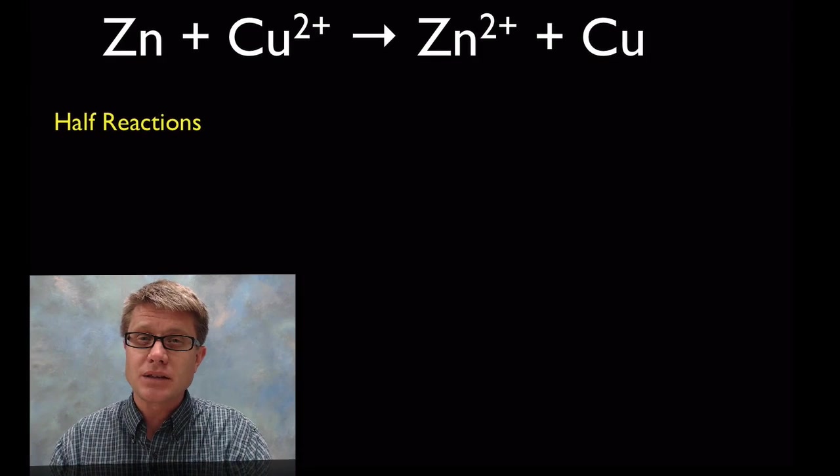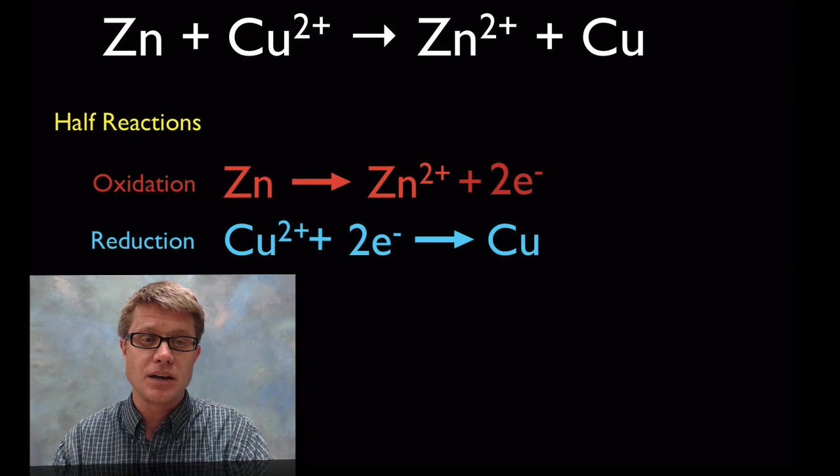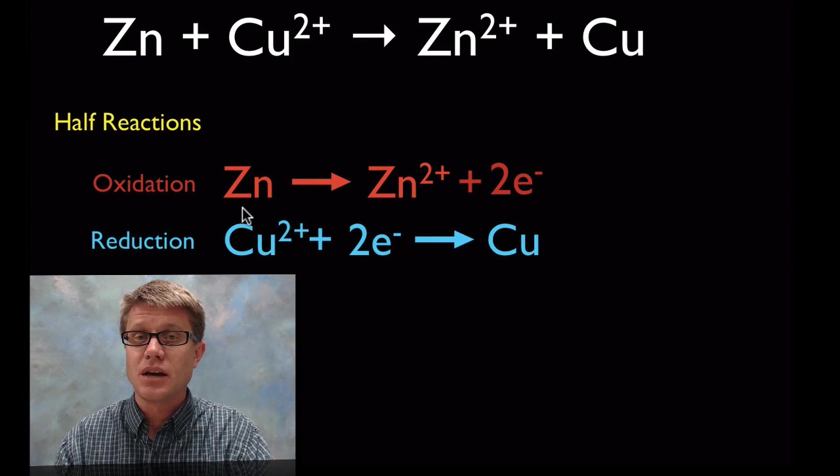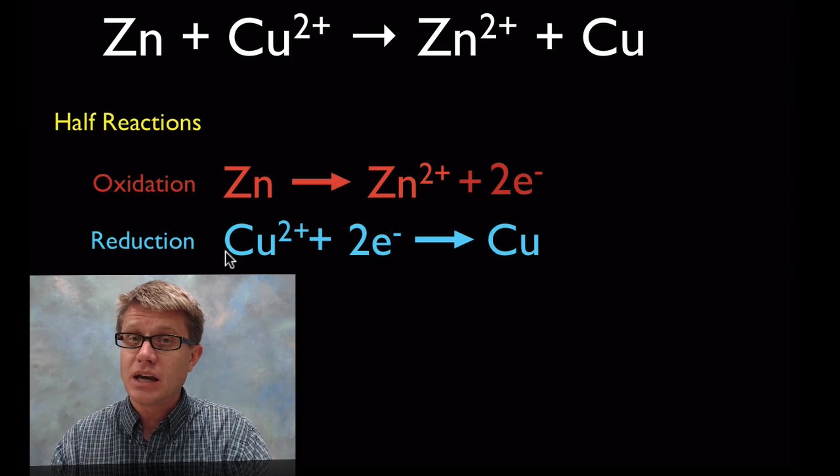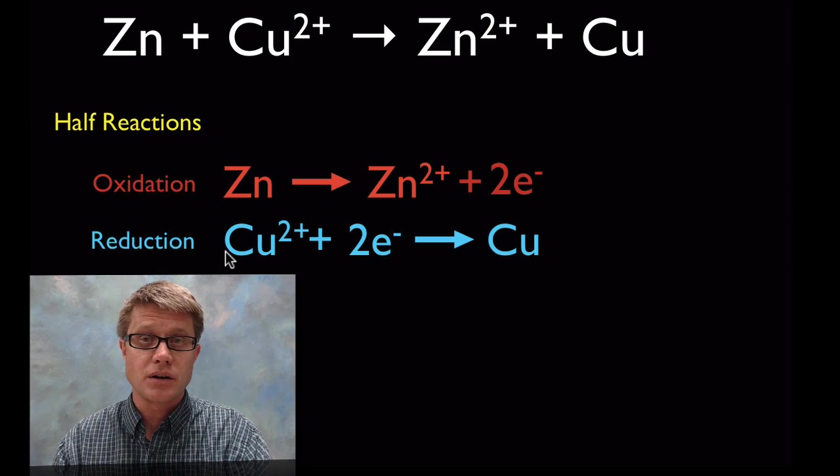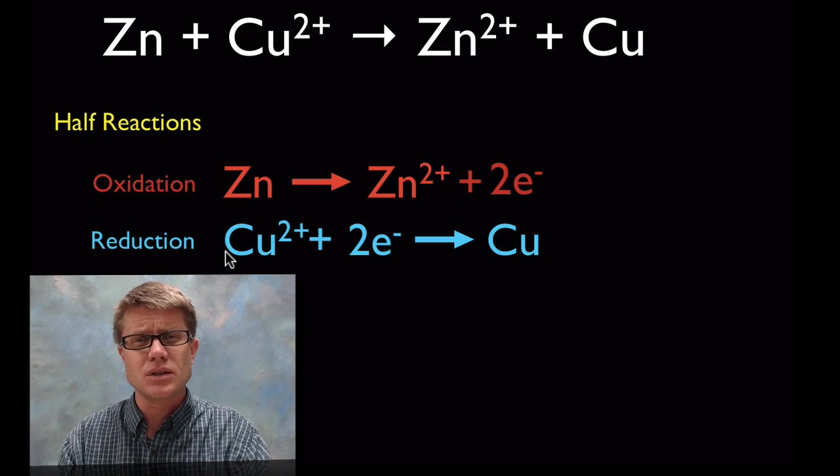And so if we break it down into its two half reactions it's going to look like this. Oxidation is where the zinc is losing its electrons and the copper is gaining those electrons. Those are the two parts. And so in a cell what we try to do is separate those.